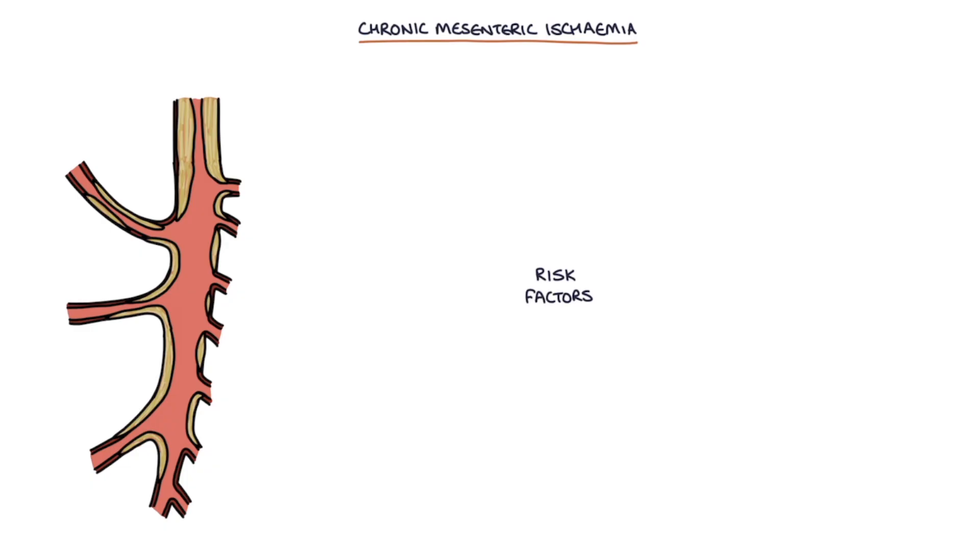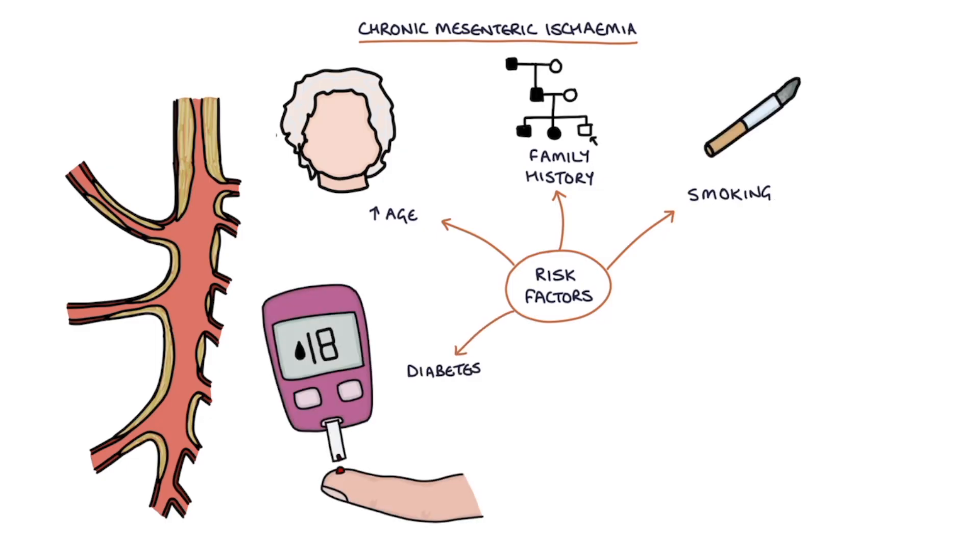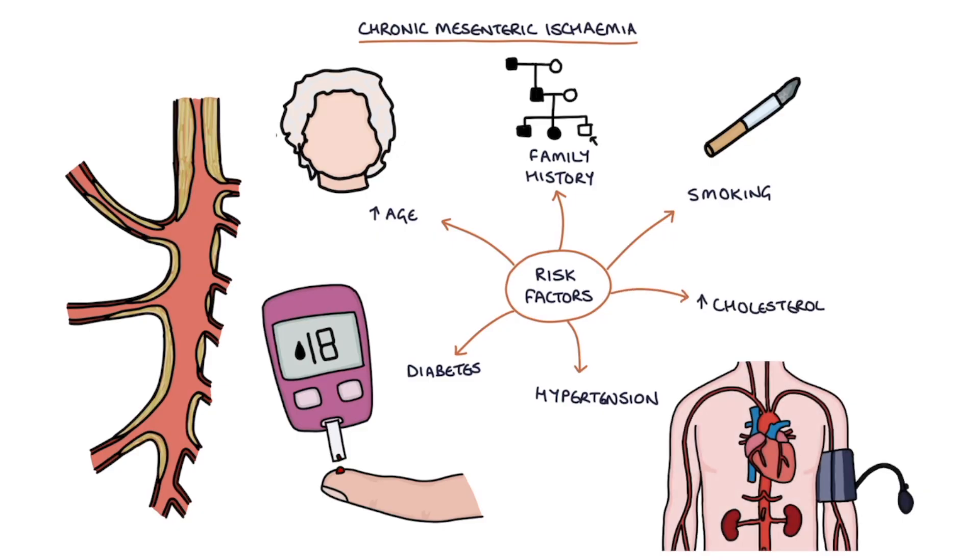The risk factors for chronic mesenteric ischemia are the same as any other cardiovascular disease including increased age, family history, smoking, diabetes, hypertension and raised cholesterol.